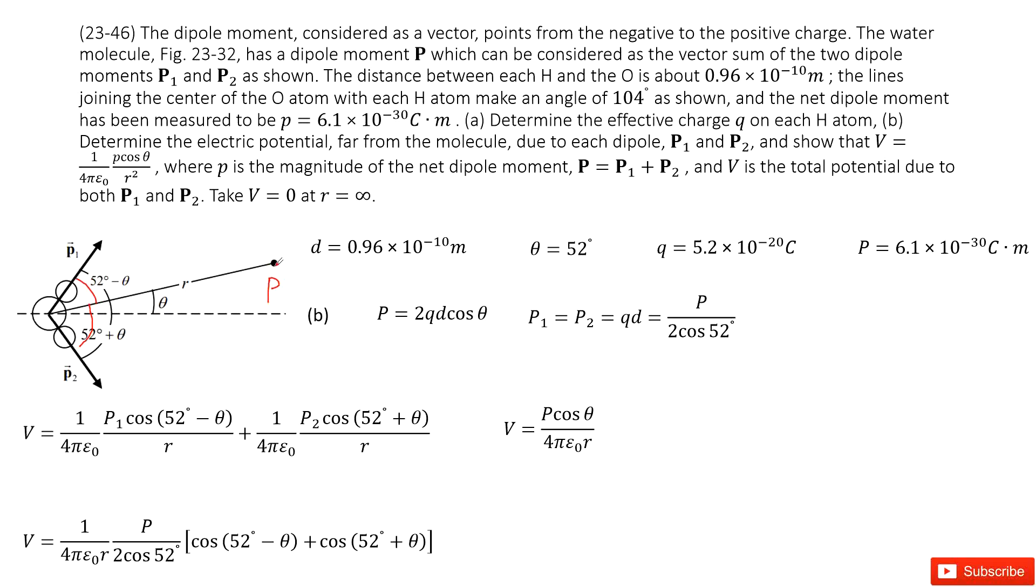As we just talked about, this vector should include two parts. First part, the momentum, the dipole momentum p1. The second part, the dipole momentum p2.